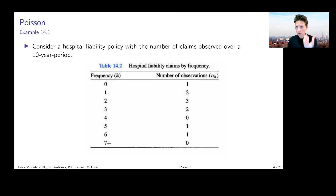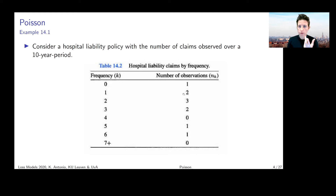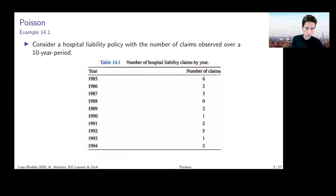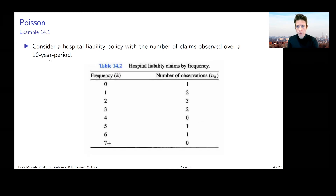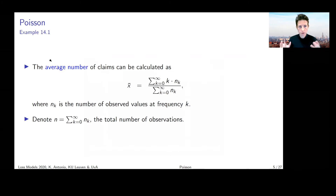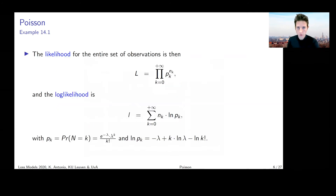The total number of claims reported is obtained by taking the sum of the element-wise product of the k values with the n_k's. We can also get that by summing the observations on the right-hand side. So these are two different ways to look at it: one gives the average number of claims, and the other gives the total number of observations.